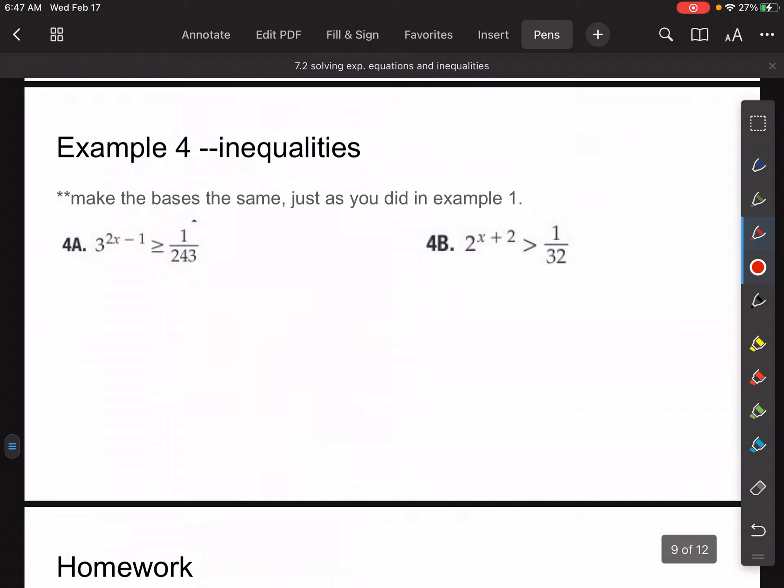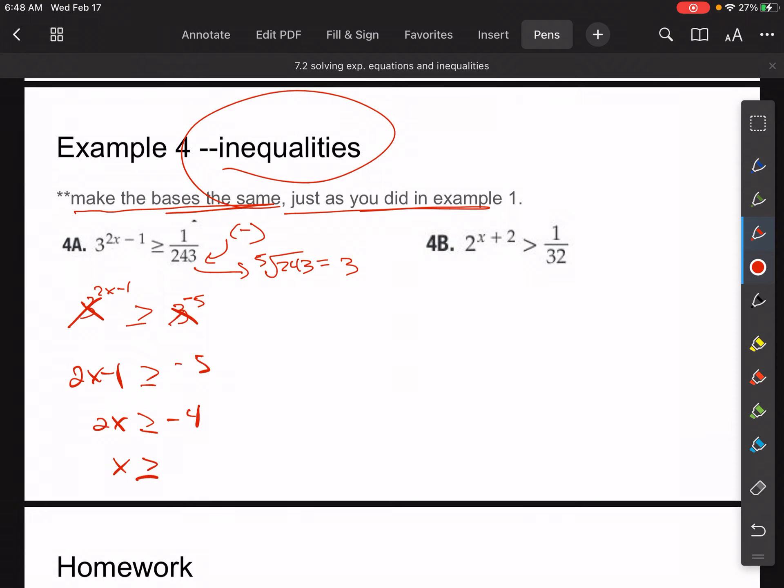So example four, the last thing we're going to do with this is we're going to do some inequalities. So the big thing here is make the bases the same, just like we did in example one, so we can compare them. For this one, what's interesting is since this is a 1 over, it's going to be a negative exponent. So we have 3 to the 2x minus 1 is greater than or equal to, let's see if we can turn this into something with a 3, and it turns out you can. If you took the fifth root of 243, you would end up with 3. So this thing could be written like this: 3 to the 5, but we have that 1 over, so it's negative, 3 to the negative 5. So now the bases are the same, so we have 2x minus 1 is greater than or equal to negative 5. Let's add 1 to both sides, so we have 2x is greater than or equal to negative 4. So then we have x is greater than or equal to, divide both sides by 2, negative 2.